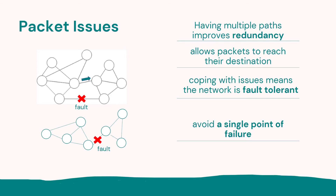There are some issues with packets. What we want in our network is for the packet to have multiple routes — multiple paths — so that if there was a fault on one line it could go to a different route. Having these multiple paths improves network redundancy and allows packets to get to their destination. Being able to deal with these types of problems is called fault tolerance — if there's a fault, the network can tolerate it.